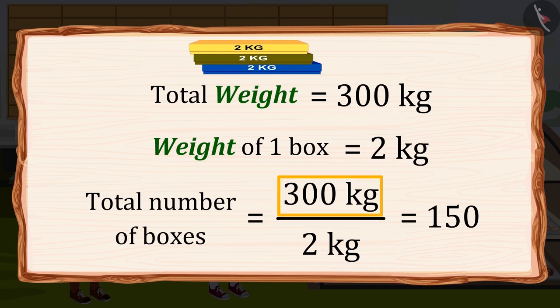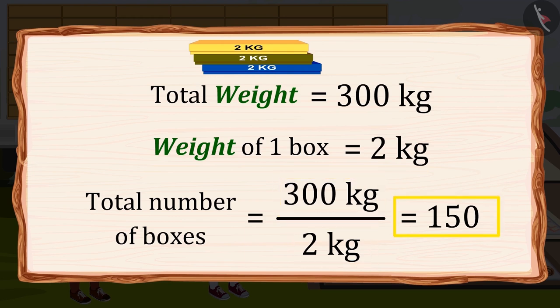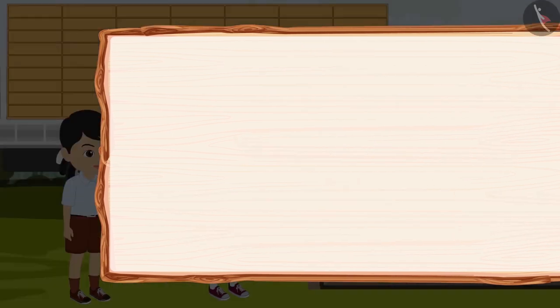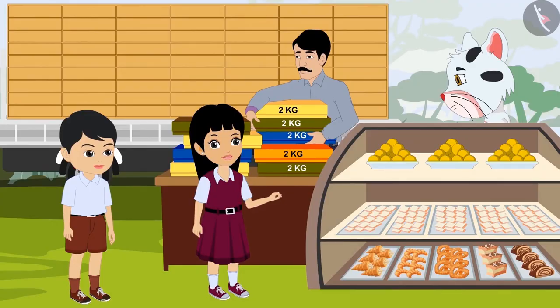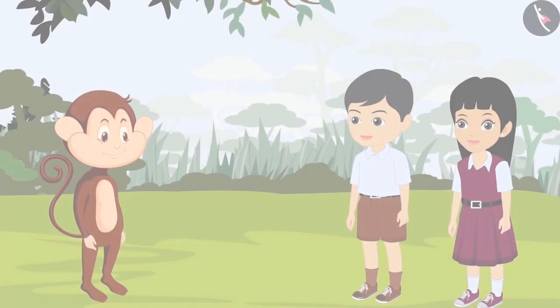Total sweets weight 300kg divided by 2kg equals 150. That means I ordered 150 boxes. Oh wow, that was so easy!